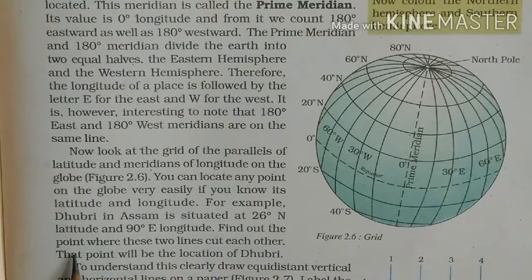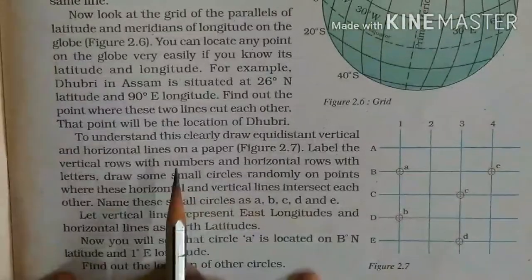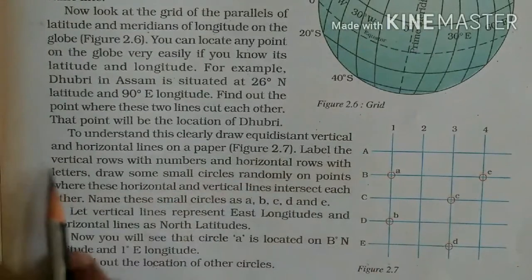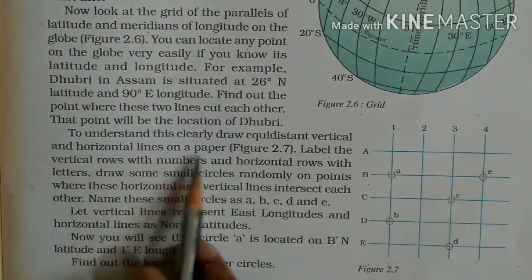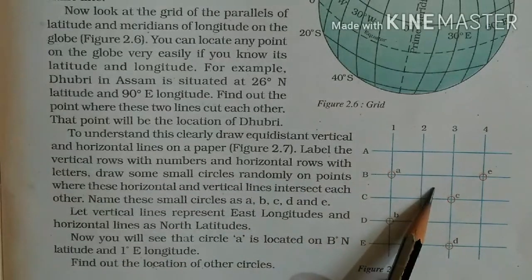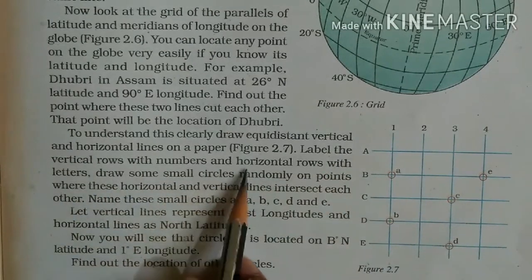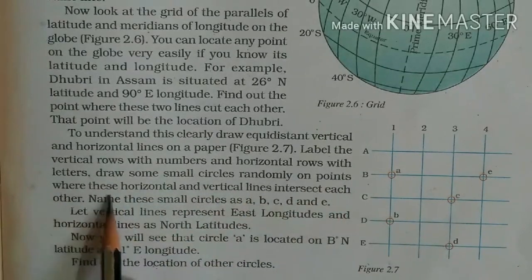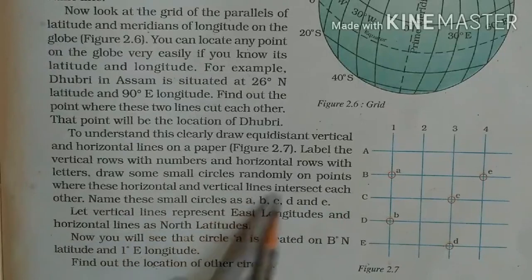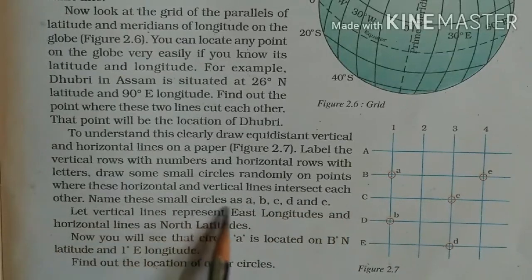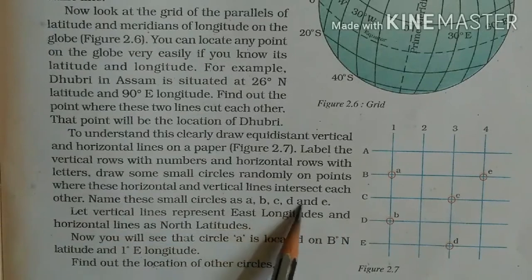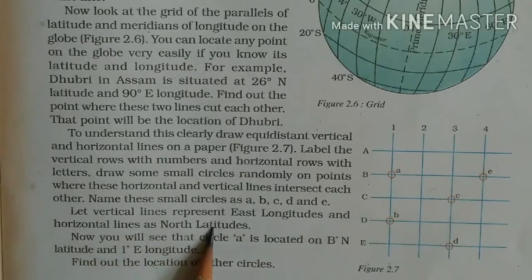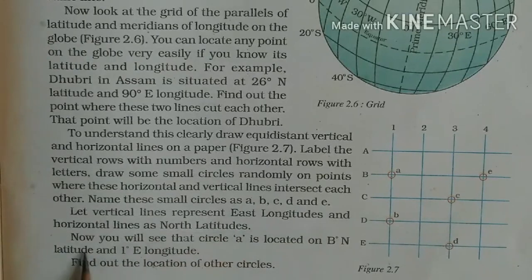Find out the point where these two lines cut each other — that point will be the location of Dhubri. To understand this clearly, draw equidistant vertical and horizontal lines on a paper. Label the vertical rows with numbers and horizontal rows with letters.